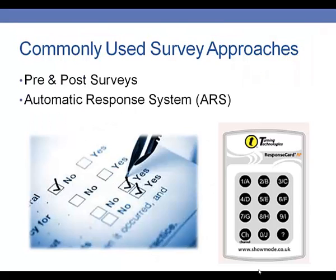Two commonly used survey approaches include pre and post surveys and automatic system response surveys. Pre and post surveys happen at the beginning and end of your program, while automatic response systems get used during your program delivery. We'll talk in this chapter about pre and post surveys, and in the next video, Chapter 12B, we'll talk about automatic response system surveys and how they can be helpful for your program evaluations.